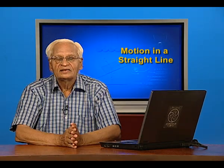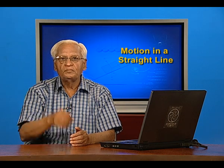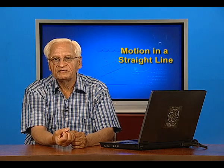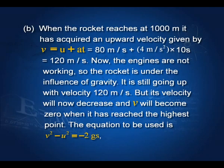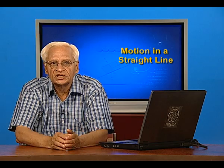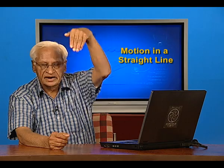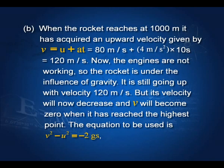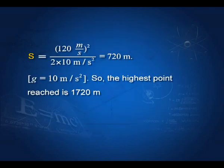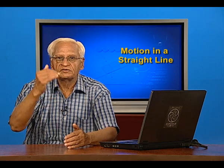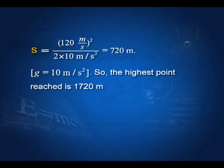When the engines fail, the rocket is in free motion governed by gravity alone — acceleration is now downwards. To find maximum height after engine failure: initial velocity is 120 m/s upward, final velocity is 0, g = −10 m/s². Using v² − u² = 2gs, we get s = 720 meters. Total height reached by the rocket is 1000 + 720 = 1720 meters.